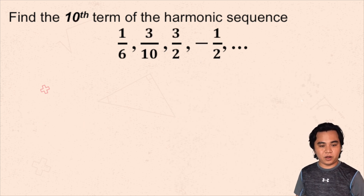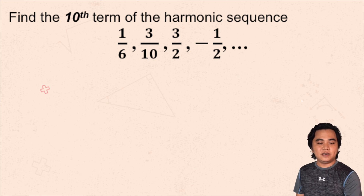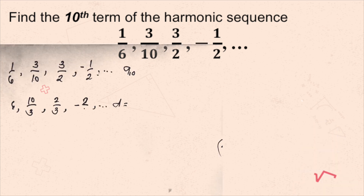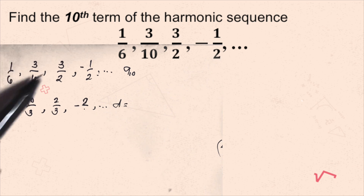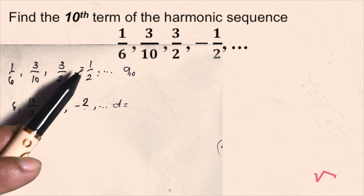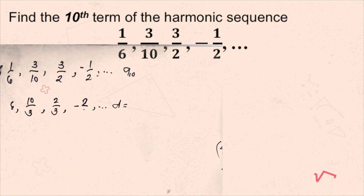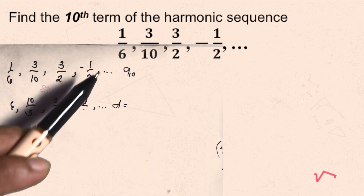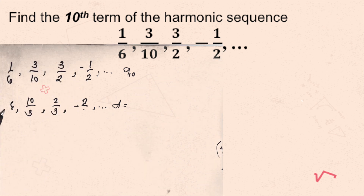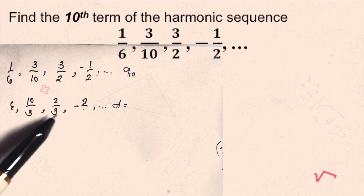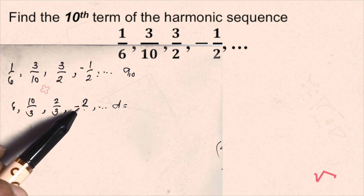Find the 10th term of the harmonic sequence: 1/6, 3/10, 3/2, negative 1/2. Convert this first into arithmetic sequence: the reciprocal of 1/6 is 6, the reciprocal of 3/10 is 10/3, the reciprocal of 3/2 is 2/3, and the reciprocal of negative 1/2 is negative 2.